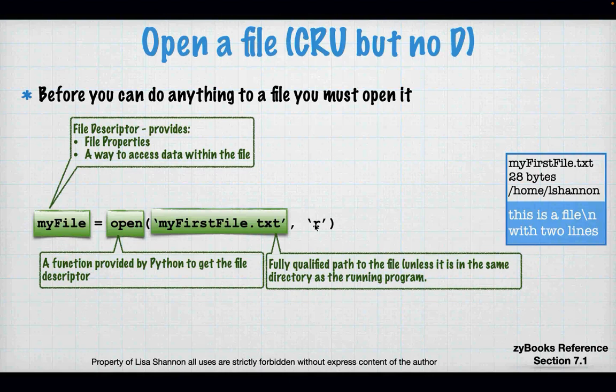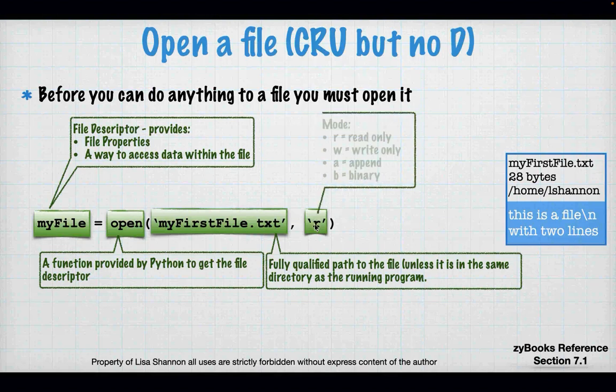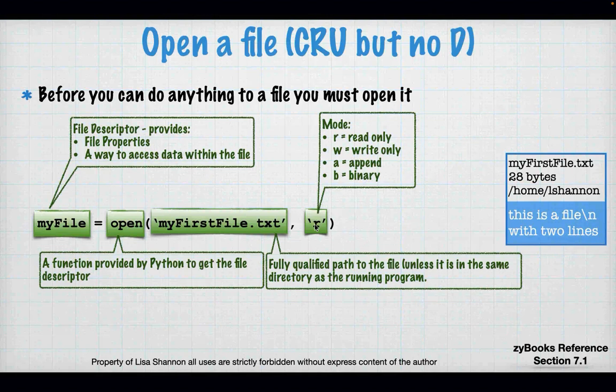Fully qualified means that you give it the full path on the system. And then we have a mode. There are four modes, but you can combine them: read only, write only, append, and binary. So you can have a read-write file, you can have a read-write append file, you can have an append only. There are all kinds of ways you can combine those modes. But those are the basics of the open statement — you need to tell us the mode, because your operating system needs to know what you're planning on doing with the file.